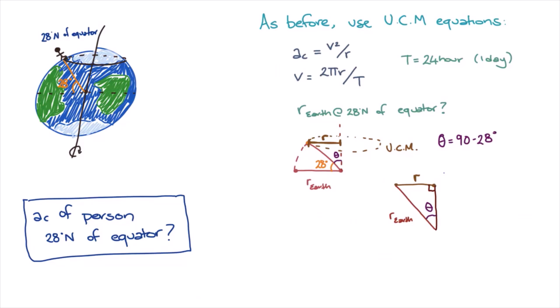So now that we have an angle, the radius of the earth, and a right angle triangle, we can use trigonometry to work out r.